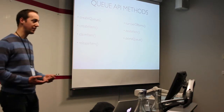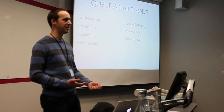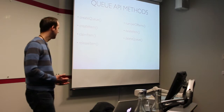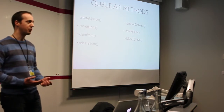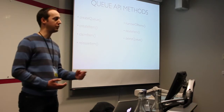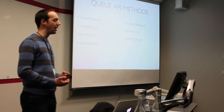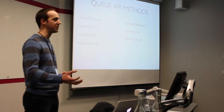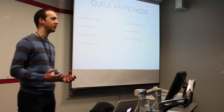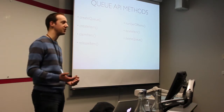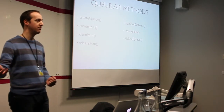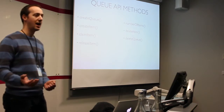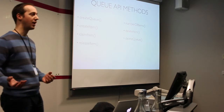createItem passes data to the queue backend and stores it for processing later. claimItem fetches the next item from the queue. You can also specify a lease time — so you can say 'claim this item and let nothing else claim it for the next X seconds.' By default I think it's 30 seconds. After that time expires, other threads can pick it back up, so if something goes wrong in processing, the item won't sit there forever.